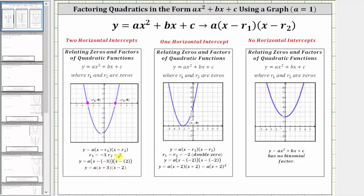Or if the graph touches the horizontal axis and then bounces back, as we see in this graph, we only have one horizontal intercept, but because of the behavior of the graph, we call this a double zero.